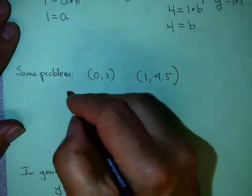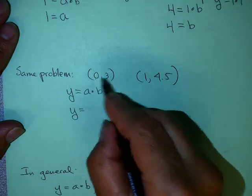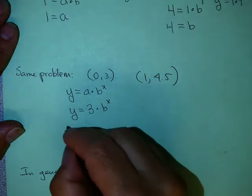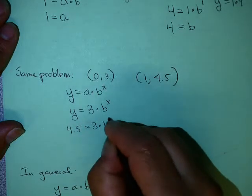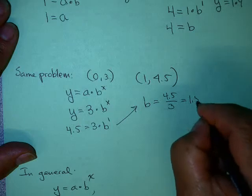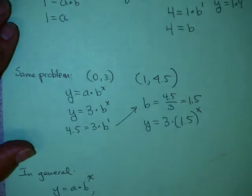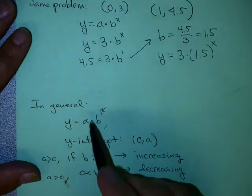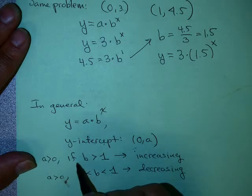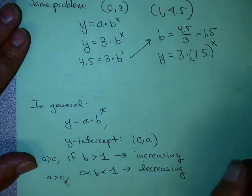With points (0, 3) and (1, 4.5): a equals 3, so y equals 3 times b to the x. Plugging in the second point: 4.5 equals 3 times b to the 1st, so b equals 4.5 over 3, which is 1.5. Therefore y equals 3 times 1.5 to the x. In general, for y equals a times b to the x, the y-intercept is (0, a). If a is positive and b is greater than 1, the function is increasing; if a is positive and b is between 0 and 1, it is decreasing.